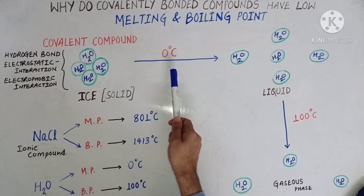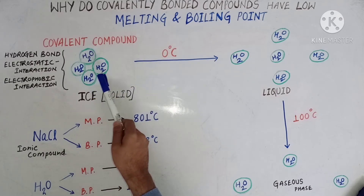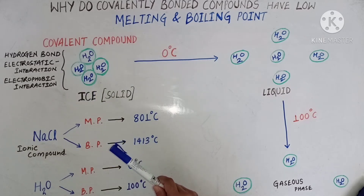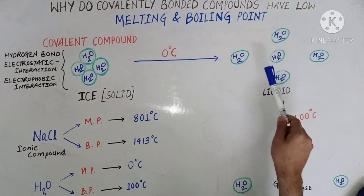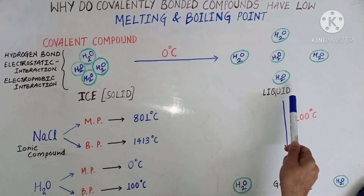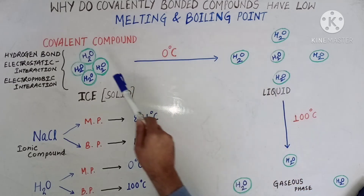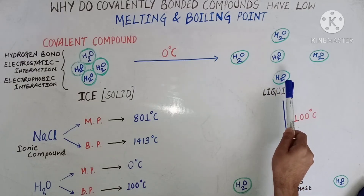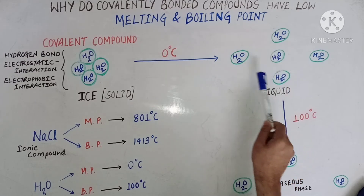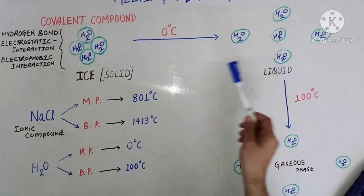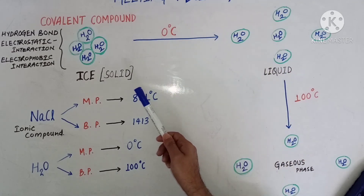When we heat solid ice above zero degrees Celsius, all the hydrogen bonds present between the water molecules — that means the intermolecular hydrogen bonds — get broken down and all the water molecules separate apart from each other. So the solid water transforms into liquid water. The water molecule remains intact; there is no harm to the water molecule. Water still has two covalent bonds between hydrogen and oxygen — only the bond between water molecules gets broken down.